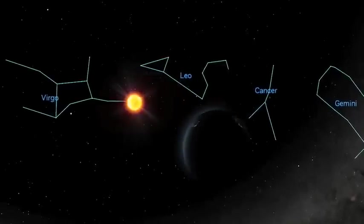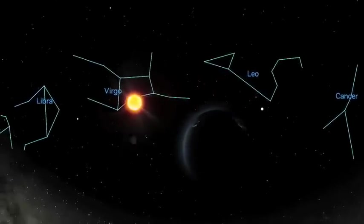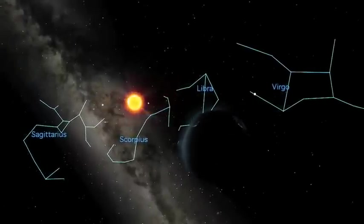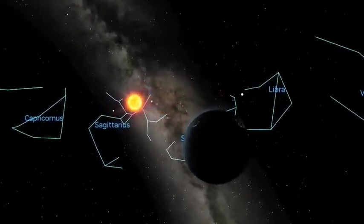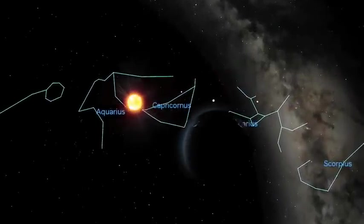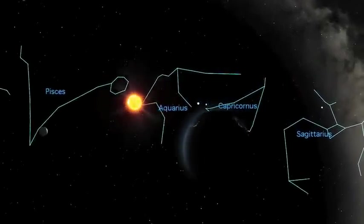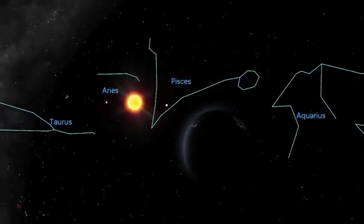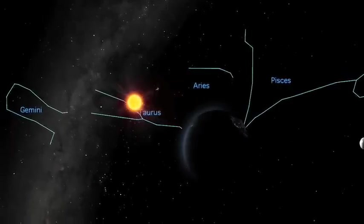Well, one way, called a sidereal year, measures our orbit against the distant stars. As viewed from the Earth, our orbit causes the Sun to appear to move through the constellations of the zodiac on a path called the ecliptic. And when the Sun returns to its starting point, a sidereal year has passed.